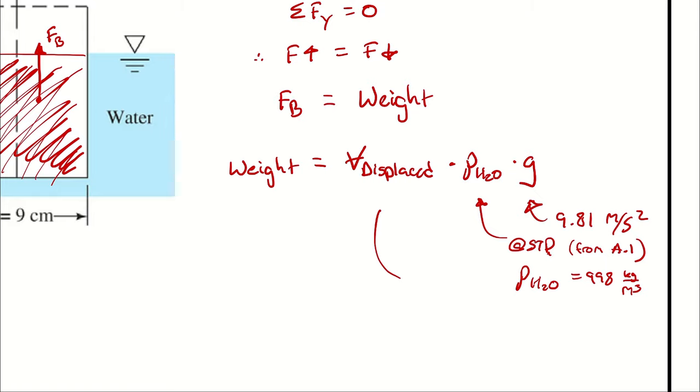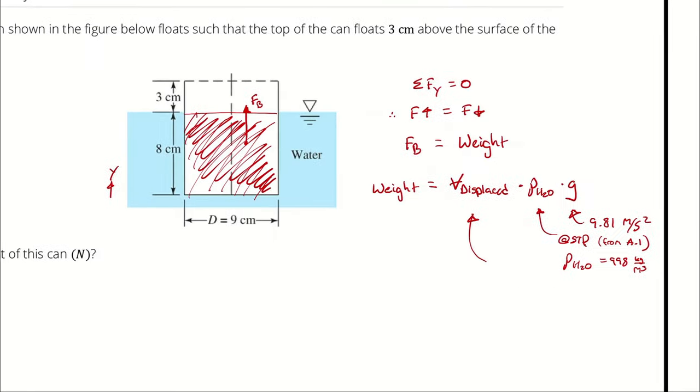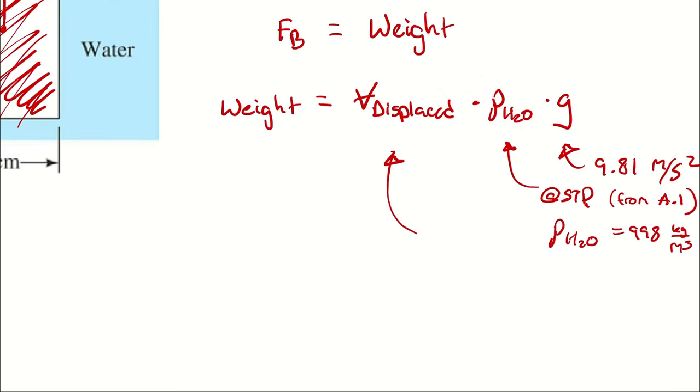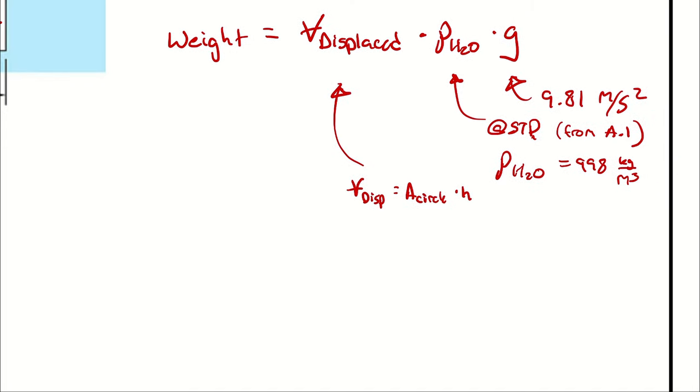And then the volume displaced is going to be the volume of a cylinder that has the cross-sectional area of a circle multiplied by height. The area of that circle is going to be pi over 4 times the diameter of this circle times height.